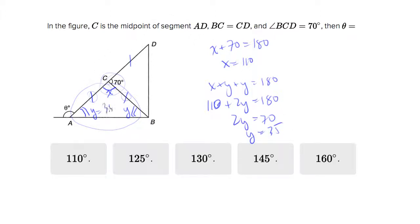So if Y is equal to 35, and we know that the sum of these two angles, Y plus theta, must equal 180, and we know Y is 35, so 35 plus theta is 180. Therefore theta equals 145. That is your fourth answer choice.